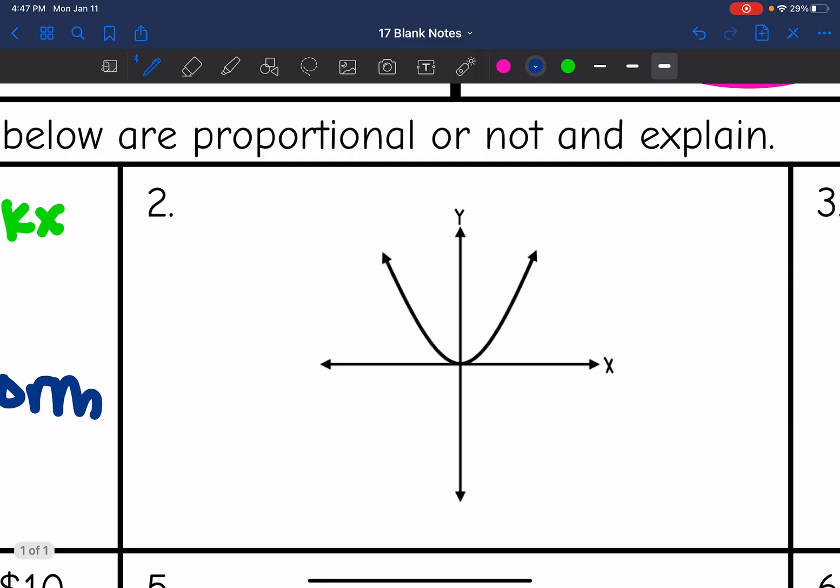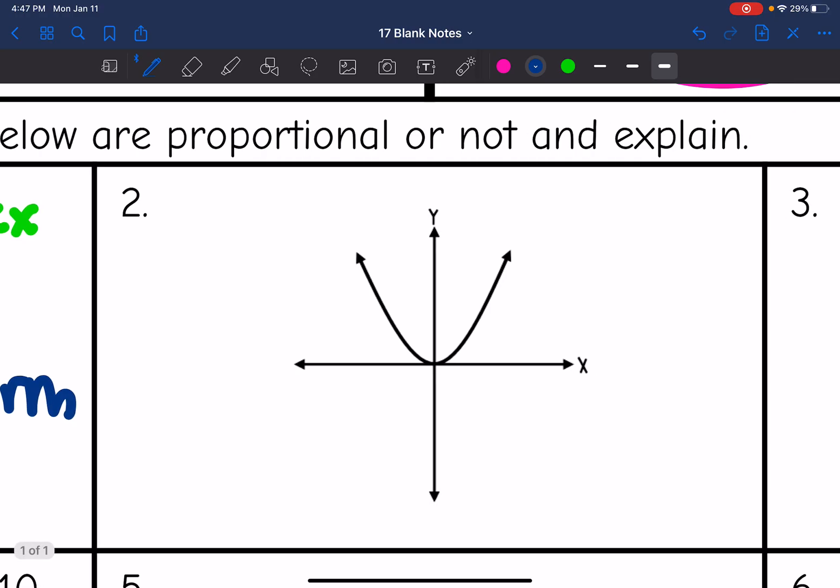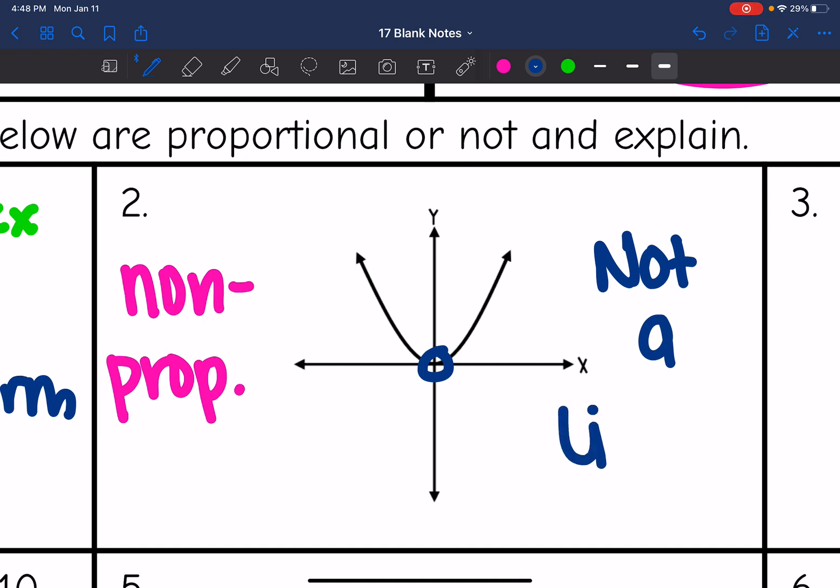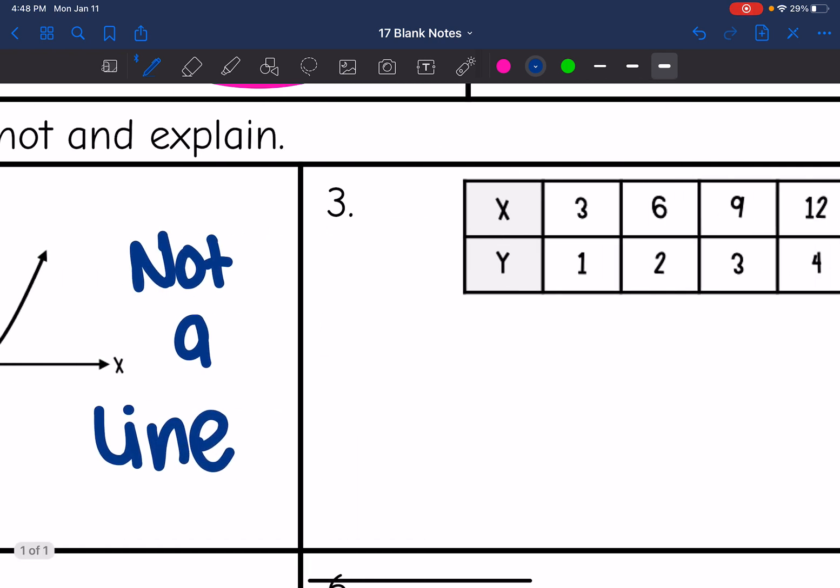Number two. I have a graph and it's going through the origin, but this is not a line. So this one would be non-proportional because it is not a line. It has to be a line and go through the origin for it to be proportional.